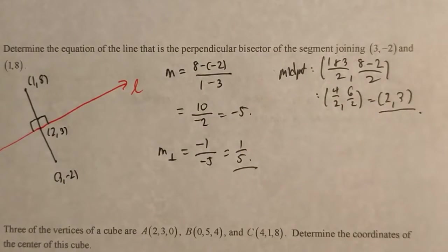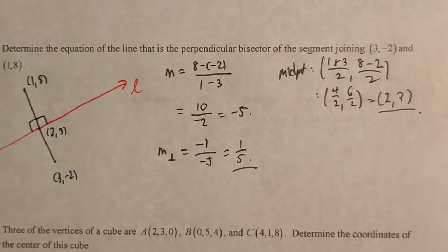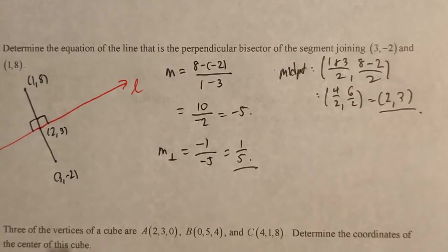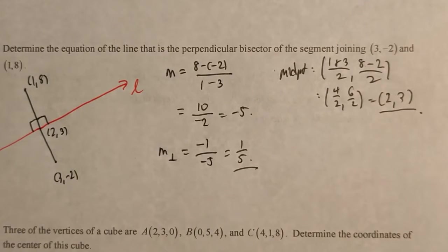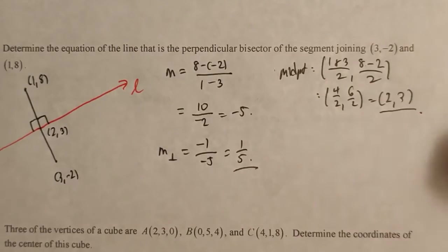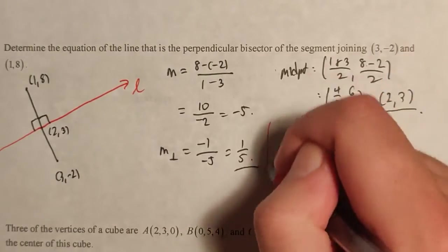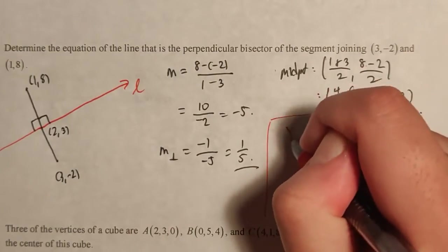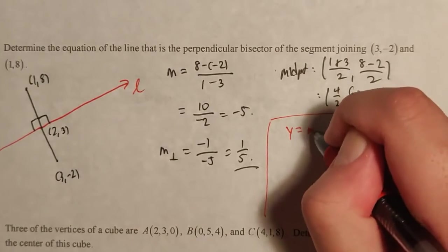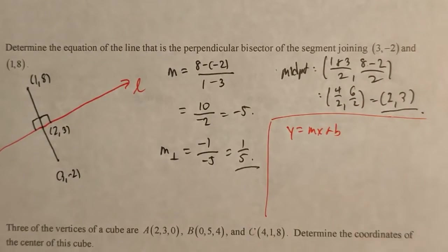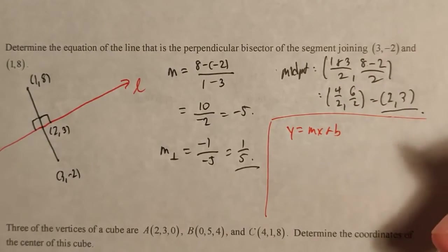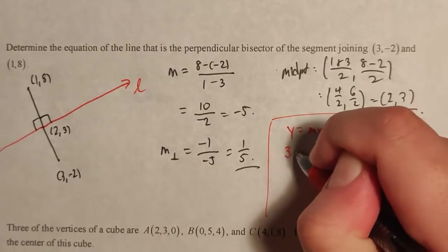So now we actually have all the properties of the line that we want. We know that this line L has to have a slope of 1 fifth and pass through the point 2 comma 3. There are many ways you can do this. You can use slope-intercept form, point-slope form, what have you. I'll go ahead and use slope-intercept. We have y equals mx plus b. We know the slope is 1 fifth, and we know the point 2, 3 lies on it.